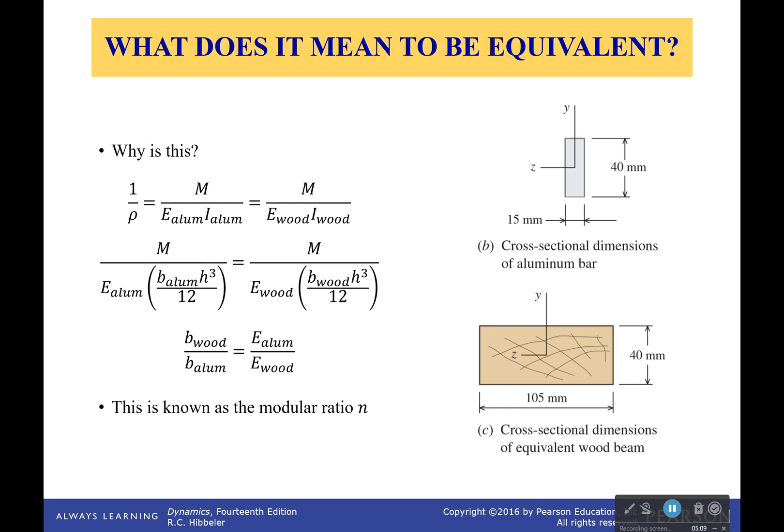Now, what we see here is that using what we found earlier, we can connect the modulus of elasticity for our new material and our old material to the width of my new material over my old material. This is something that's known as the modular ratio n.